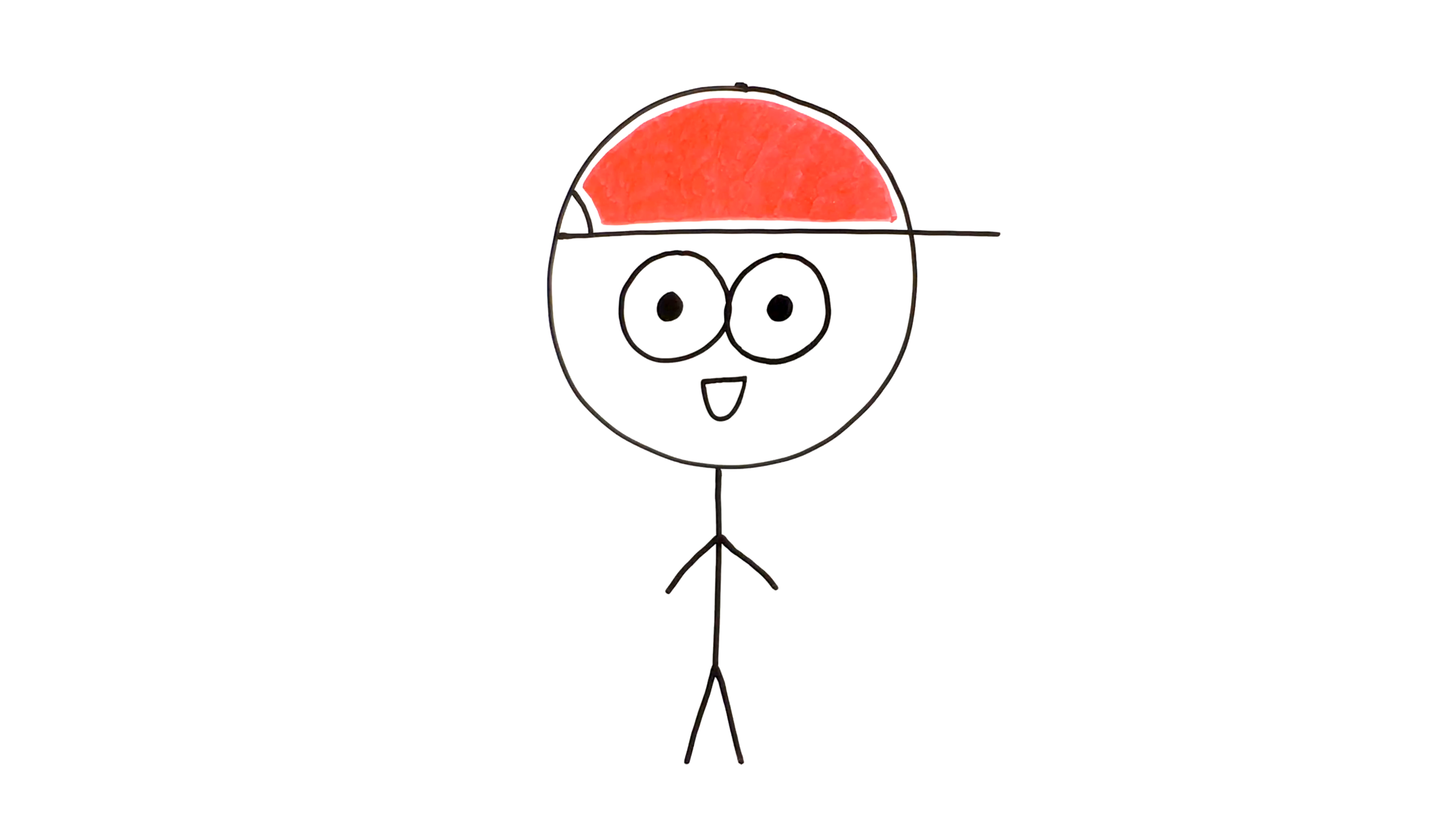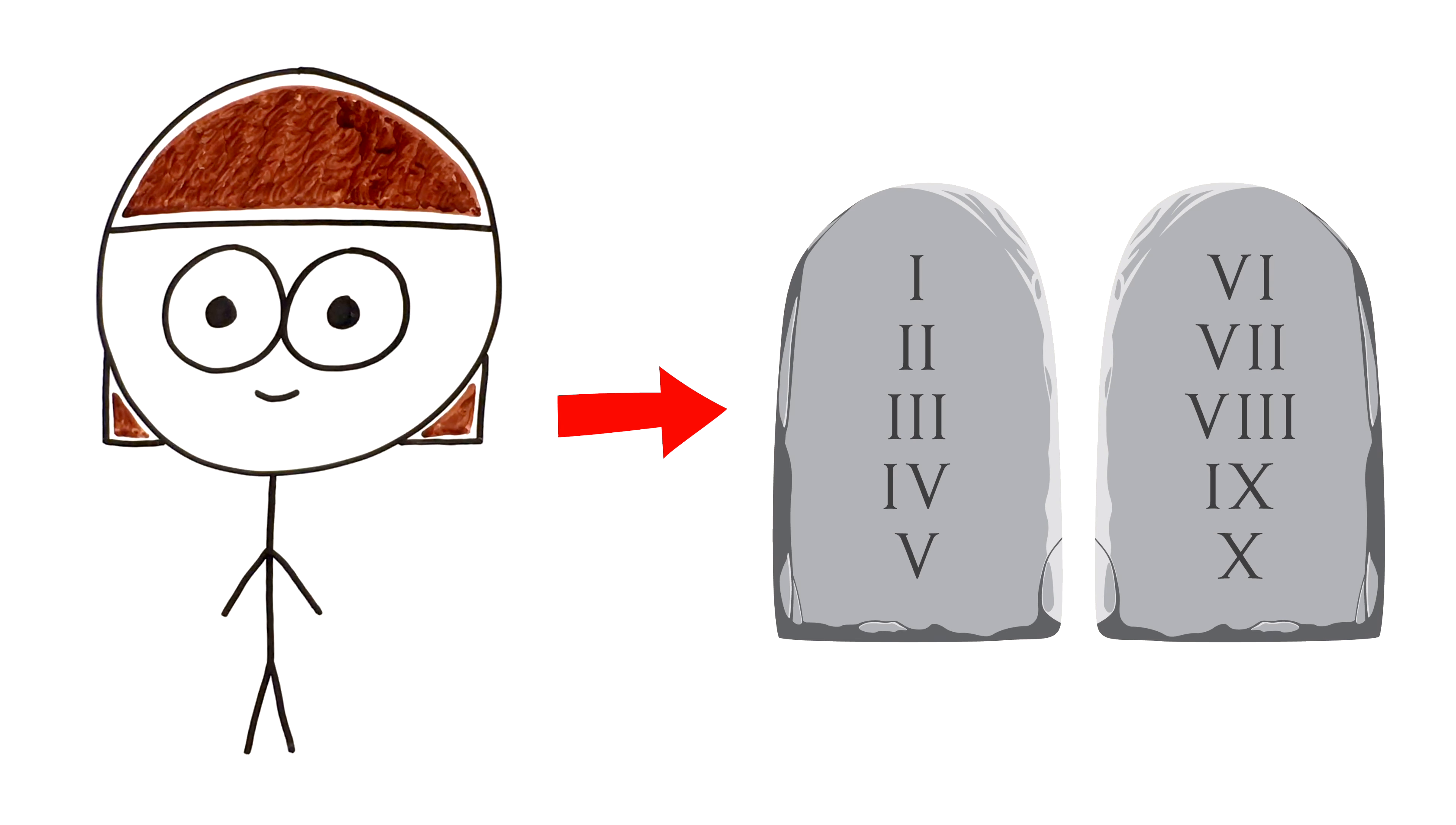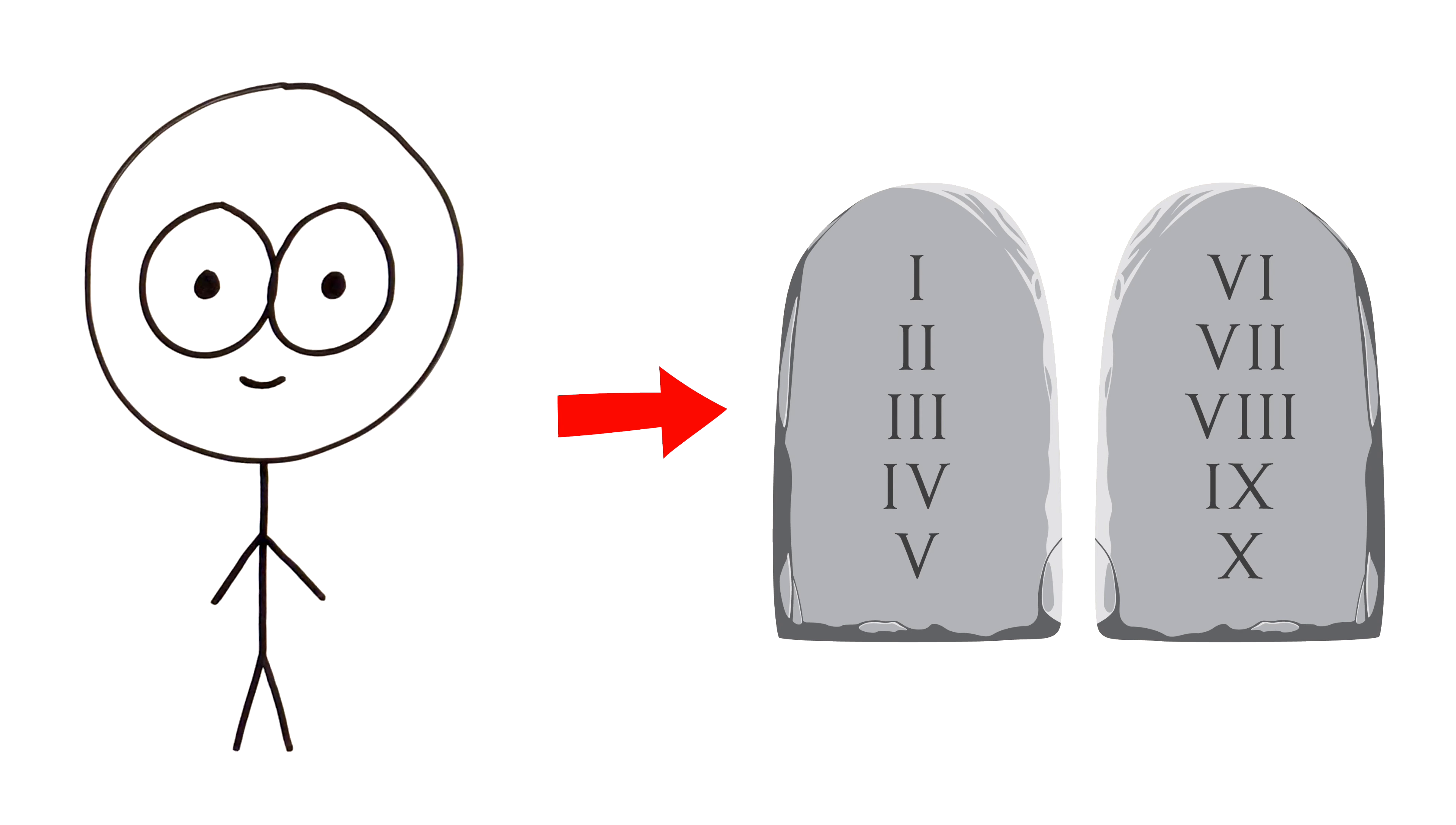Just skim Romans chapter 2 and you'll see what I'm talking about. But as Paul continues talking to the Jews about the law, he does something rather strange starting in verse 7.